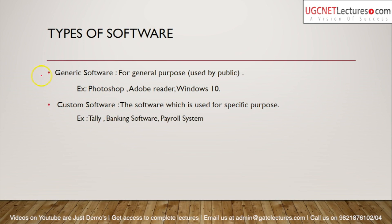We have seen many types of software and we use them daily. Let's look at the categories of software. The first category is generic software, which is general purpose software used by the public. For example, Photoshop is used by a lot of people — anyone can buy a license and use it.